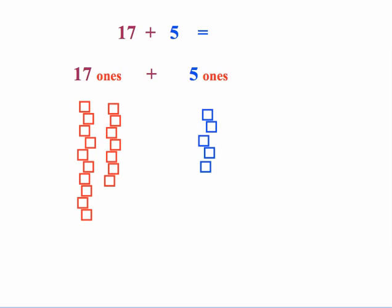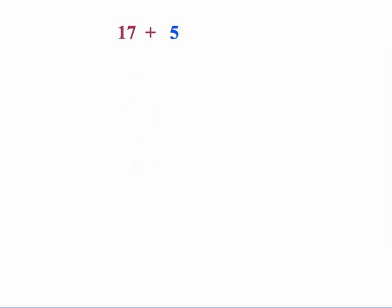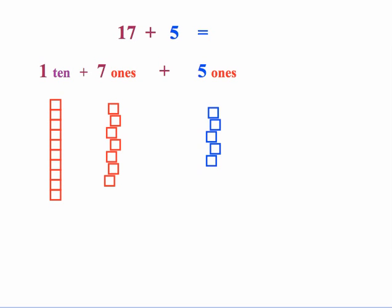So here students might just see this as 17 ones and 5 ones and just combine them to be 22 ones. But not all numbers are going to be that small. So it's important, again, that they do this using place value.